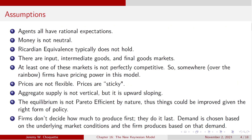Let's go through the assumptions of the model. The first is that agents all have rational expectations, meaning agents have access to all of the information within the model and they all understand what the incentive structures are for everybody else within the model. Money isn't neutral — so this means that if there's a change in the money supply, it won't just affect nominal variables, it will also affect real variables. Real economic output can be influenced.